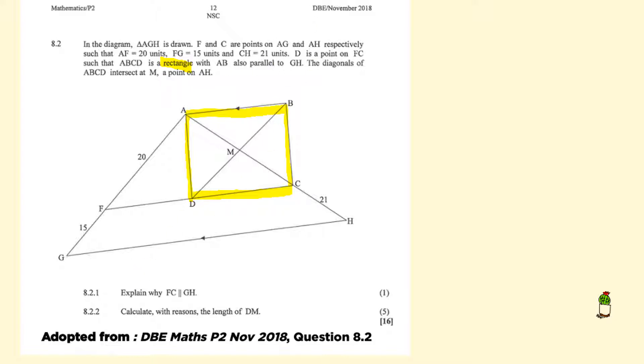First question says, we need to explain why is FC parallel to GH. Well basically, if you look, FC has a portion of it, DC, which is part of this rectangle. And obviously the properties of the rectangle still apply.